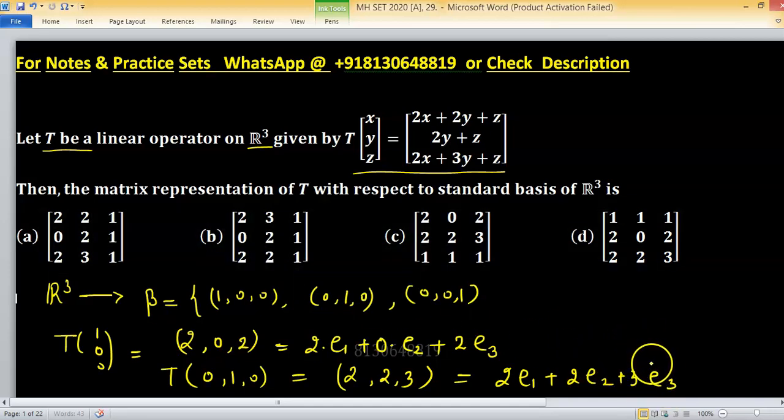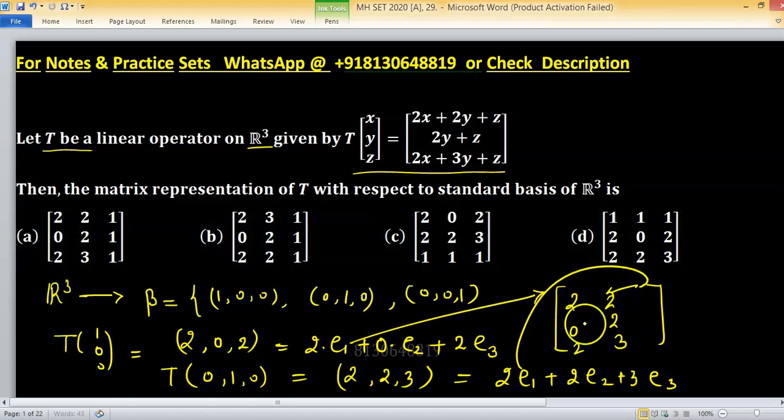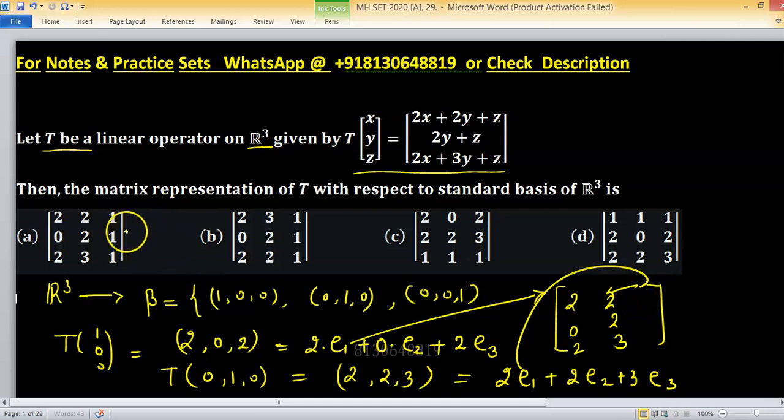So you can match which option gives you the right answer. Write column wise, so (2,0,2) this will be your first column from this one, and second column from this one is (2,2,3). There is no need to find last column, you can find it depends on you, but you can observe option A is giving you the right one.